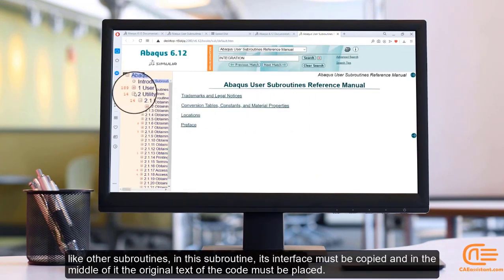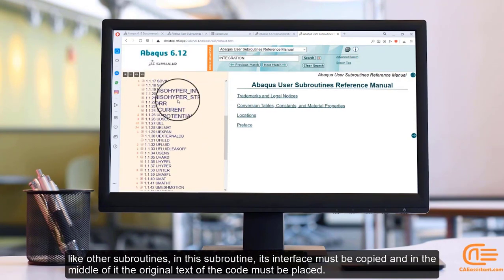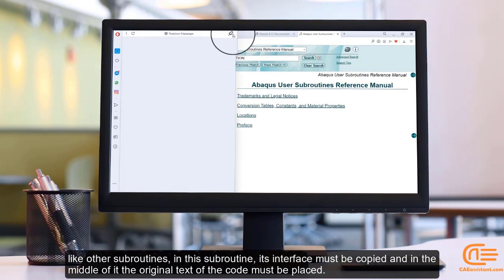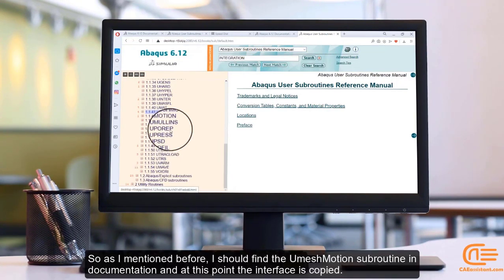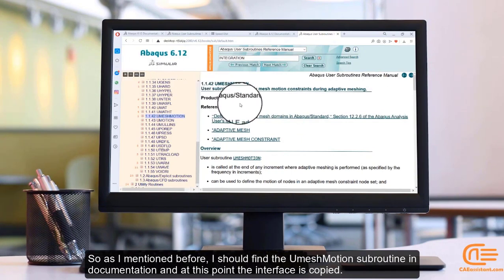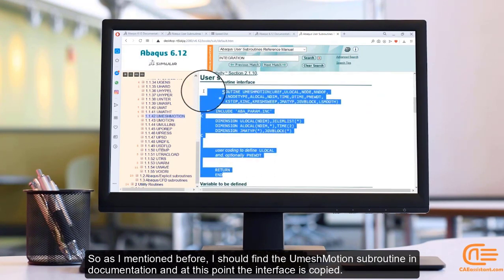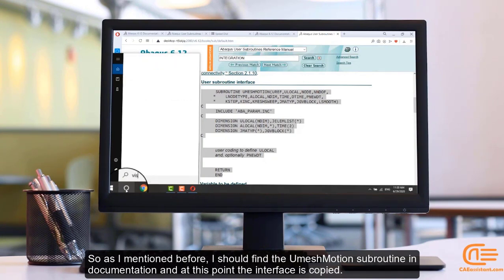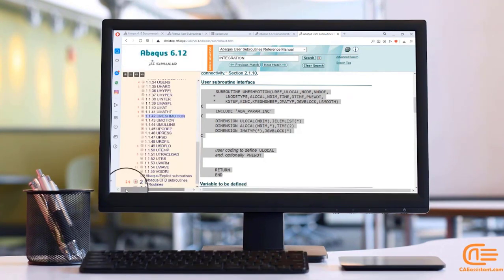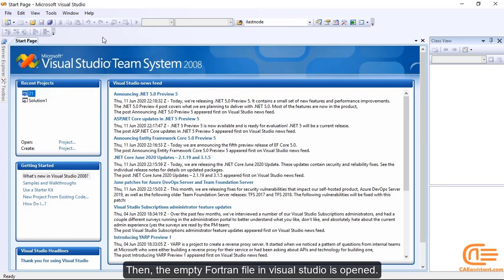Like other subroutines in this subroutine, its interface must be copied and in the middle of it, the original text of the code must be placed. So, as I mentioned before, I should find the UMESHMOTION subroutine in documentation and at this point, the interface is copied. Then the empty Fortran file in Visual Studio is opened.